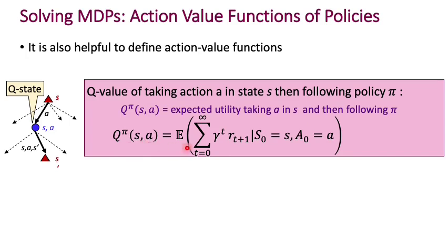You can define Q^pi(s, a) as the expected future utility, where the future rewards come from executing first action a and then following the policy. Remember, policy pi prescribes actions from any state — it maps states to actions. But for the first step we don't follow the policy; instead we execute action a, and after that we follow the policy. That's the q-value defined in general.